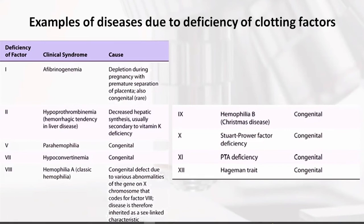Factor 5 is basically pro-accelerin, which is basically involved. In the absence of pro-accelerin, parahemophilia is formed, and it is a congenital disorder.